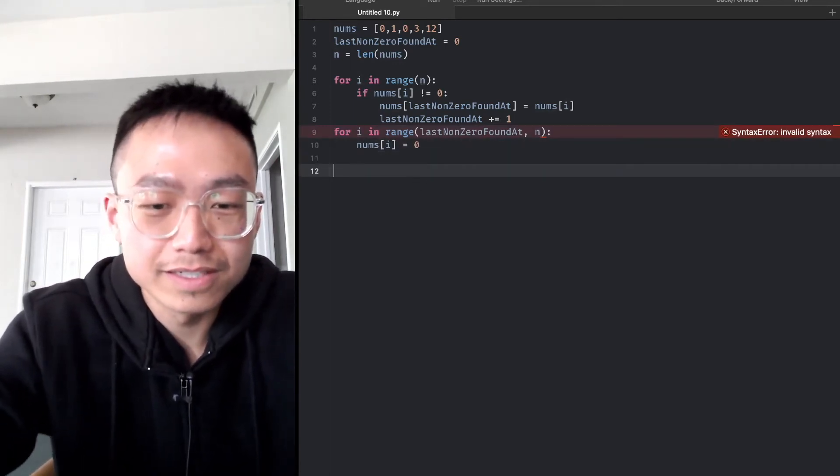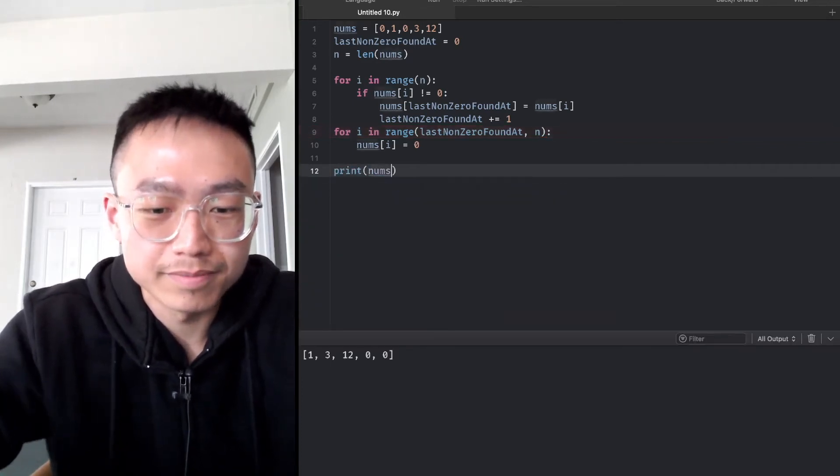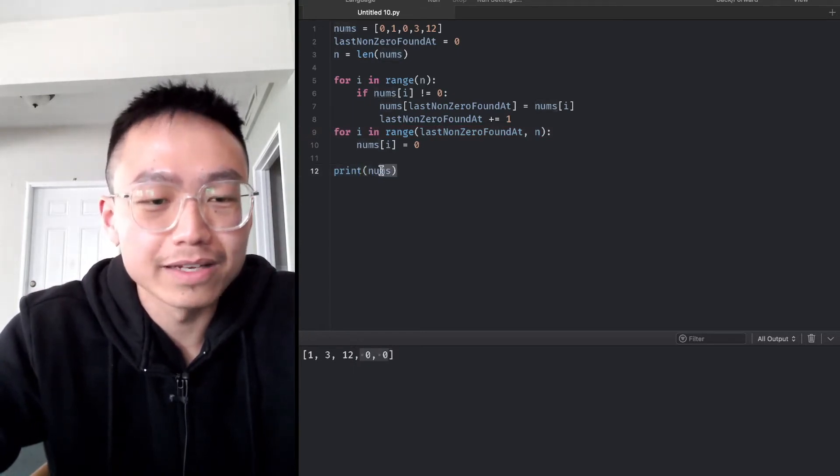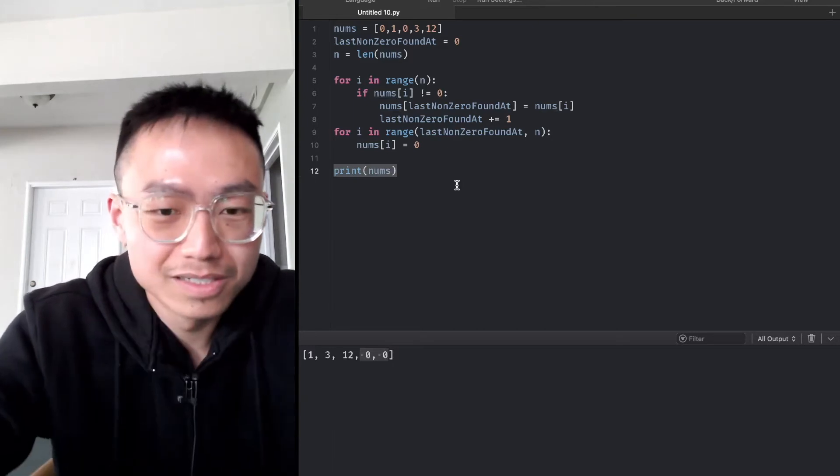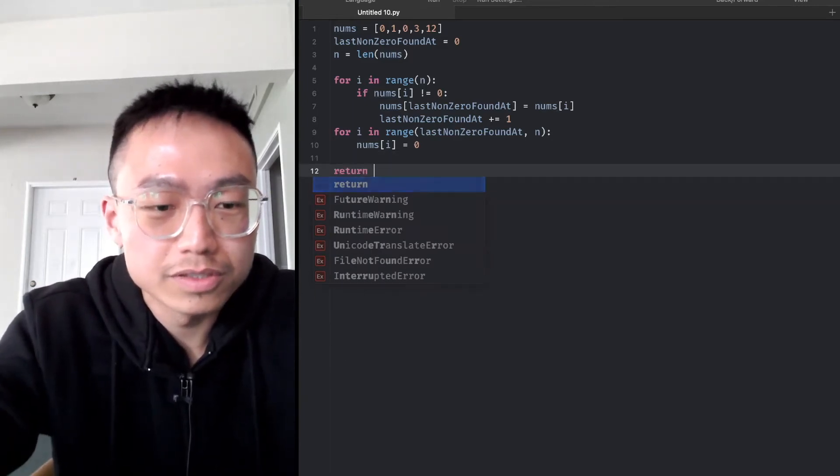So we did it. Print all numbers. Yeah, that is how it is. We just fill the last part to become zero. We can return nums.